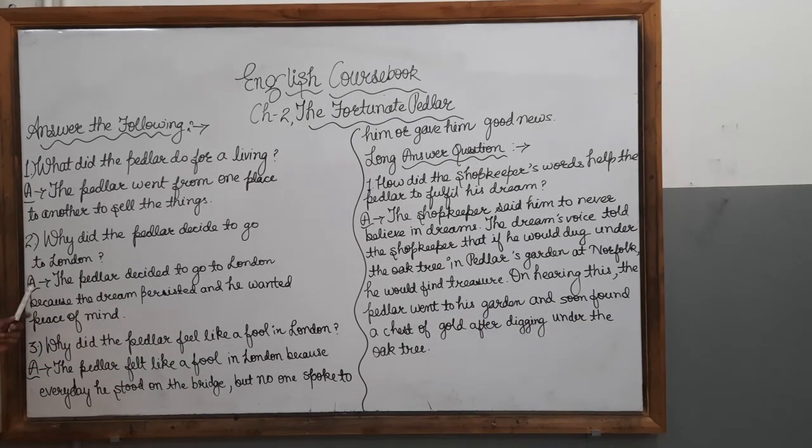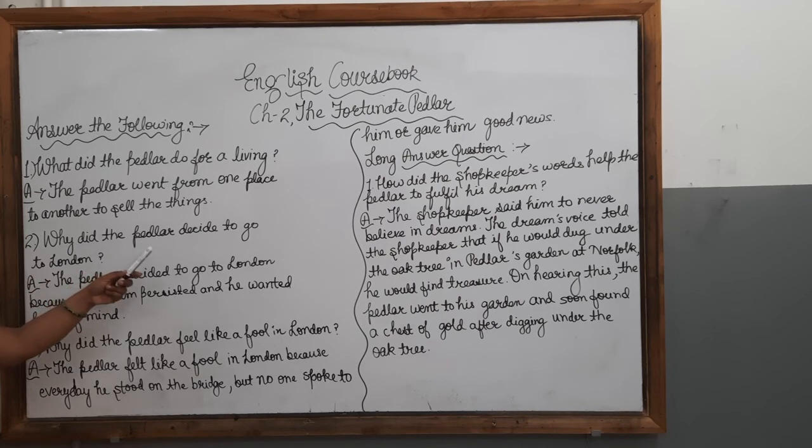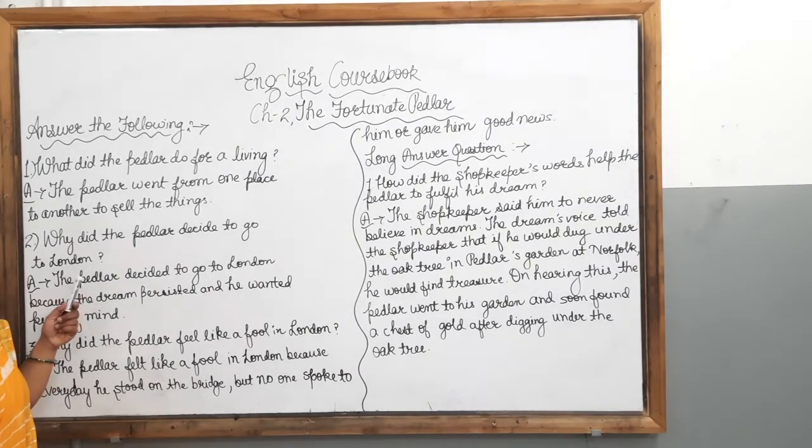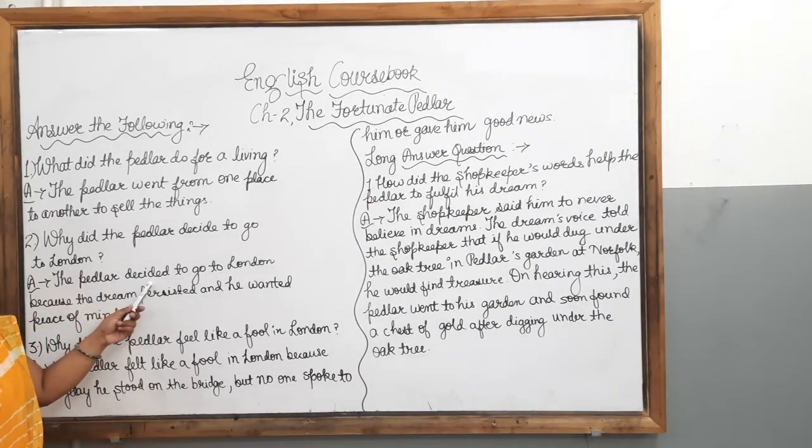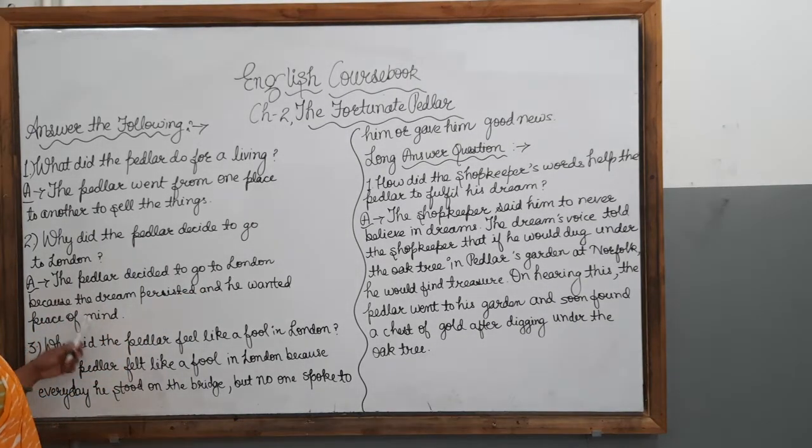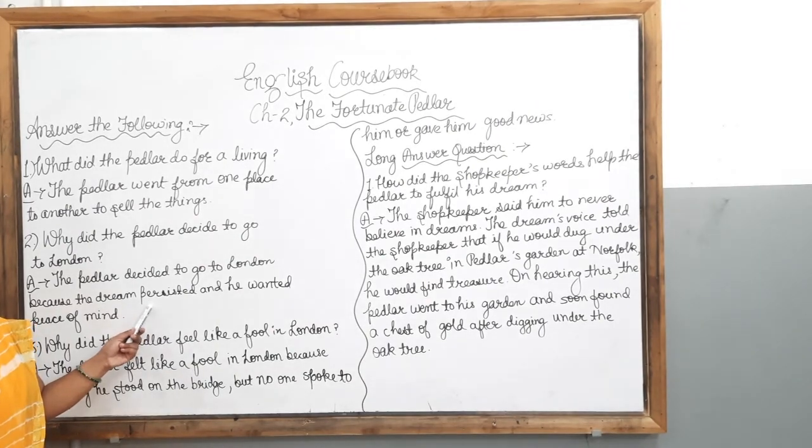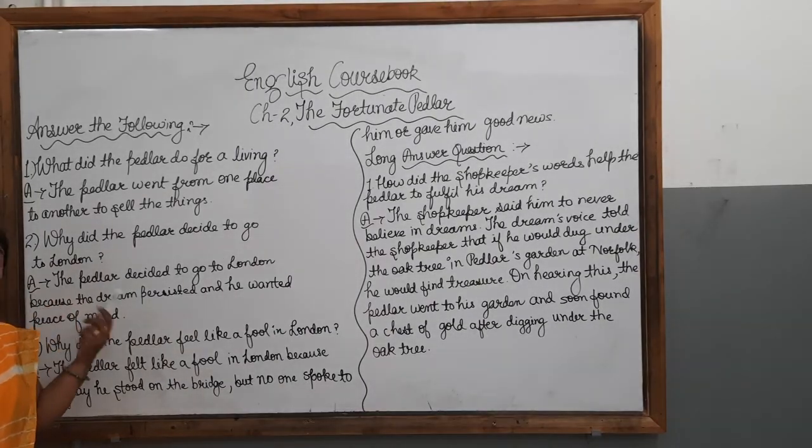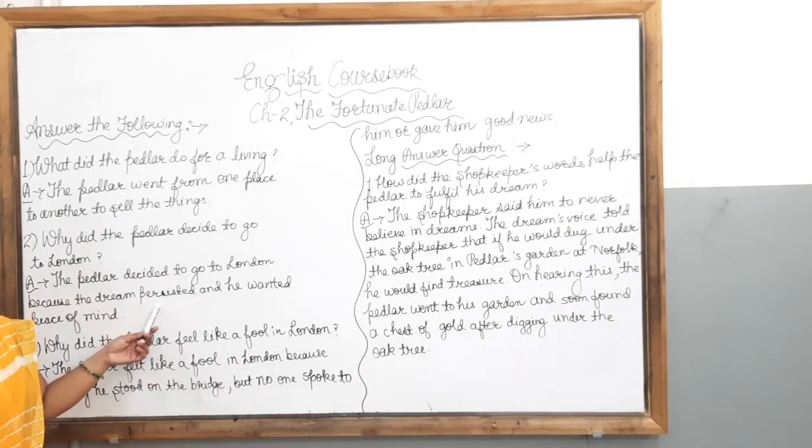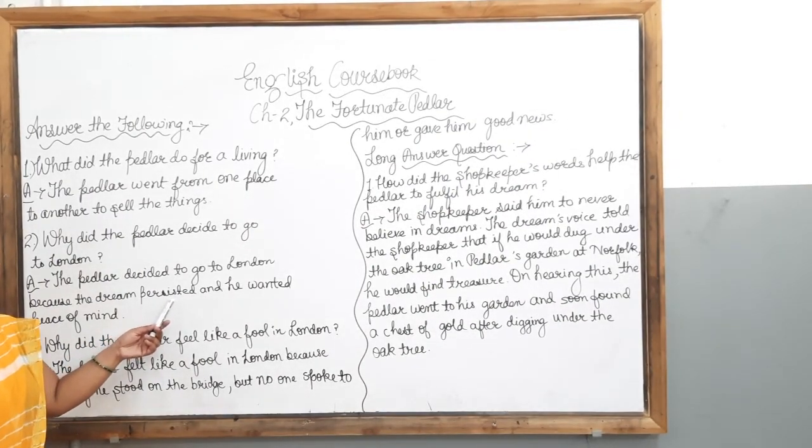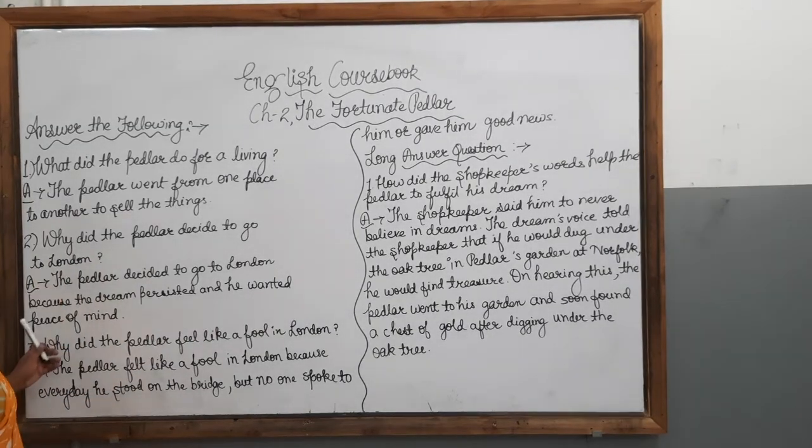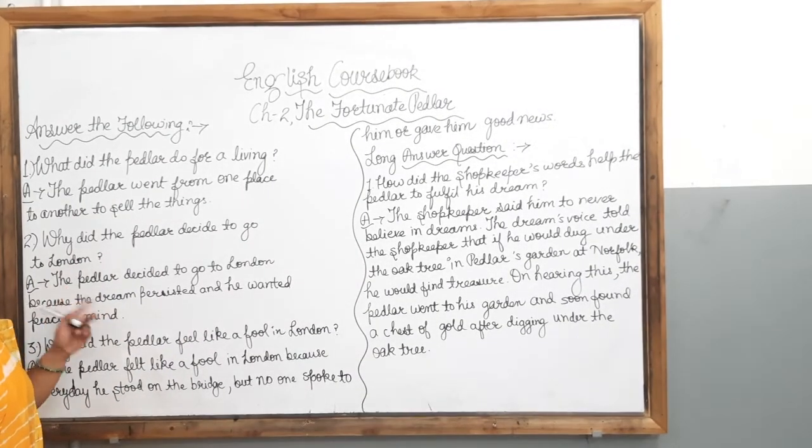Now next question is, why did the pedlar decide to go to London? So the answer is, the pedlar decided to go to London because the dream persisted. What is the meaning of persisted? The dream continued, means the dream came to him again and again. Because the dream persisted and he wanted a piece of mind. That is why he went to London.